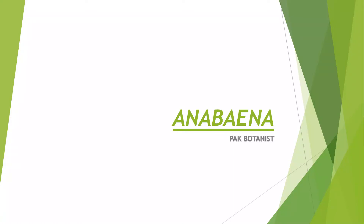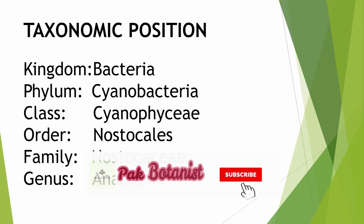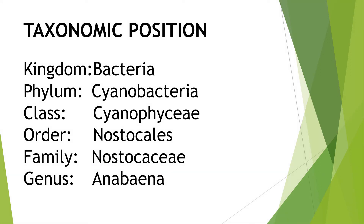Assalamu alaykum viewers, hope for the best of your health and iman. Today's topic is Anabaena. We are going to discuss what is Anabaena, its taxonomic position, its occurrence, and some of its cell structure. Here is the taxonomic position of Anabaena: Kingdom Bacteria, Phylum Cyanobacteria, Class Cyanophyceae, Order Nostocales, Family Nostocaceae, and Genus Anabaena.